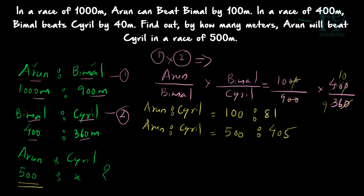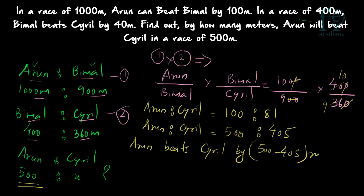When Arun has run 500 meters, Cyril will be running only 405 meters. So Arun will be beating Cyril by 500 minus 405, which gives us 95 meters. So Arun will be beating Cyril by 95 meters in a race of 500 meters.